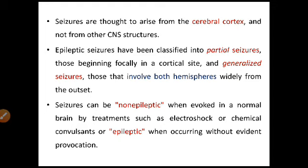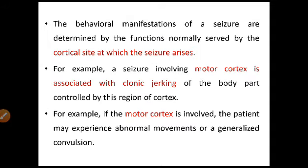Seizures are thought to arise from the cerebral cortex and not from other CNS structures. Epileptic seizures have been classified into partial seizures — generally focal on a cortical site — and generalized seizures, those which involve both hemispheres. Seizures can be non-epileptic when evoked in a normal brain by treatments such as electroshock or chemical convulsions, or epileptic when occurring without evident provocation.